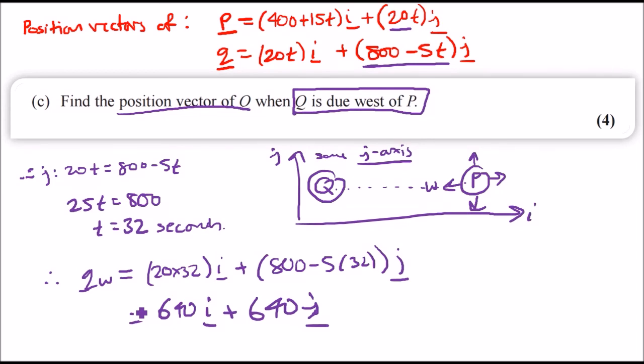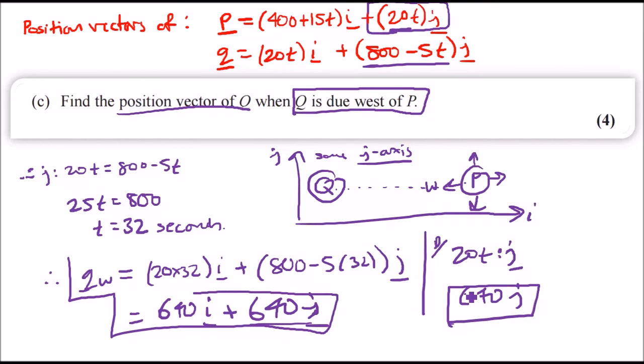This is just a coincidence that they're both 640, but to confirm this is correct, this would imply that P must have the same j value. Let's put t=32 in the j equation of P. We've got 20t j for P, replacing t we should get 640j. Yes, this is correct. We can see they're on the same plane, they're on the same height, so the position vector of Q when due west is definitely 640i plus 640j.